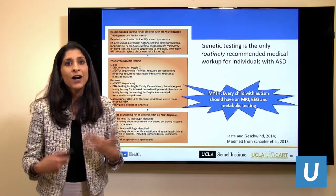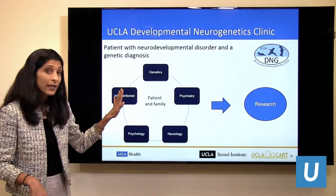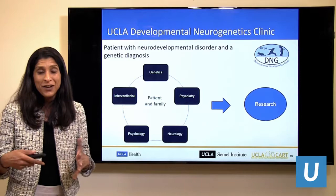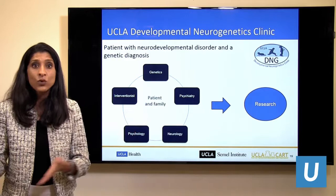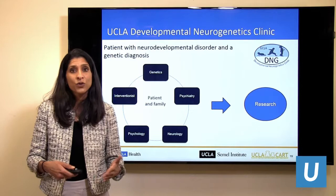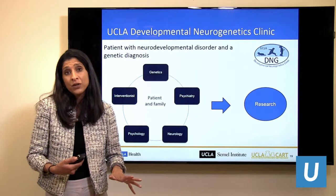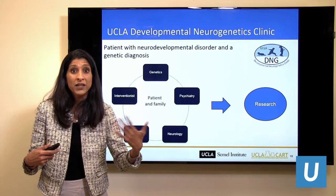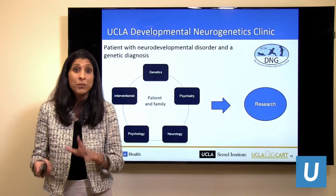We recently developed the Developmental Neurogenetics Clinic at UCLA through our autism center and the Department of Psychiatry. Its goal is to provide one multidisciplinary place for families whose children have a genetic condition and also have autism. We see children with genetics, psychiatry, neurology, and psychology specialists together, provide guidance on what the genetic condition might mean, tie families into research opportunities including clinical trials, and work on understanding what different genetic changes mean for brain development and whether specific behavioral patterns are characteristic of specific genetic causes — helping us target treatments better.